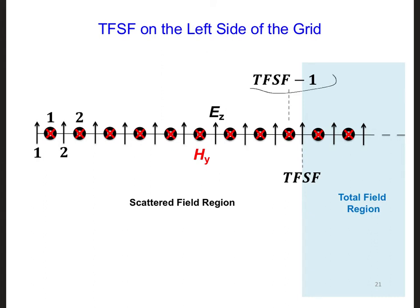The HY component at TFSF minus 1 also has an inconsistency. If we write the HY update equation, we have HY is equal to DA times HY plus DB times EZ at I plus 1 minus EZ at I.